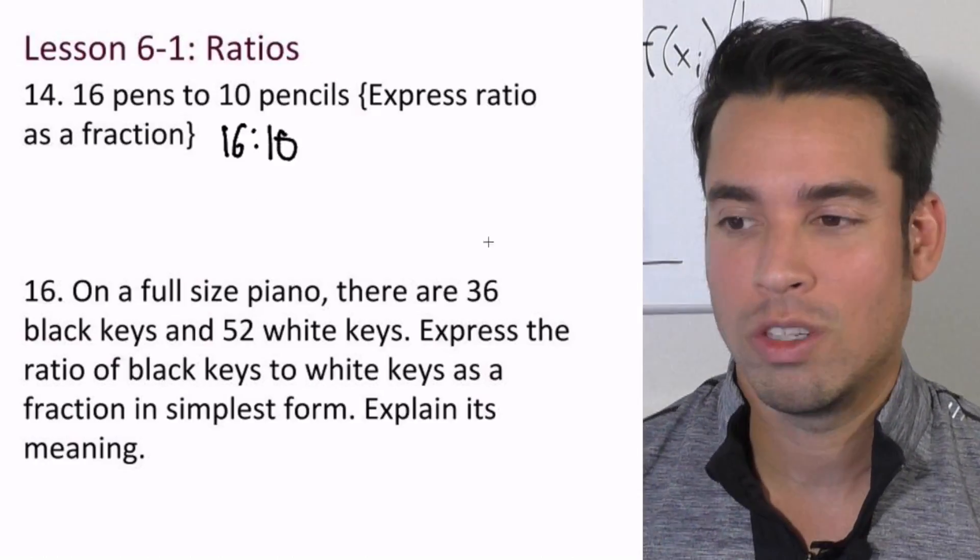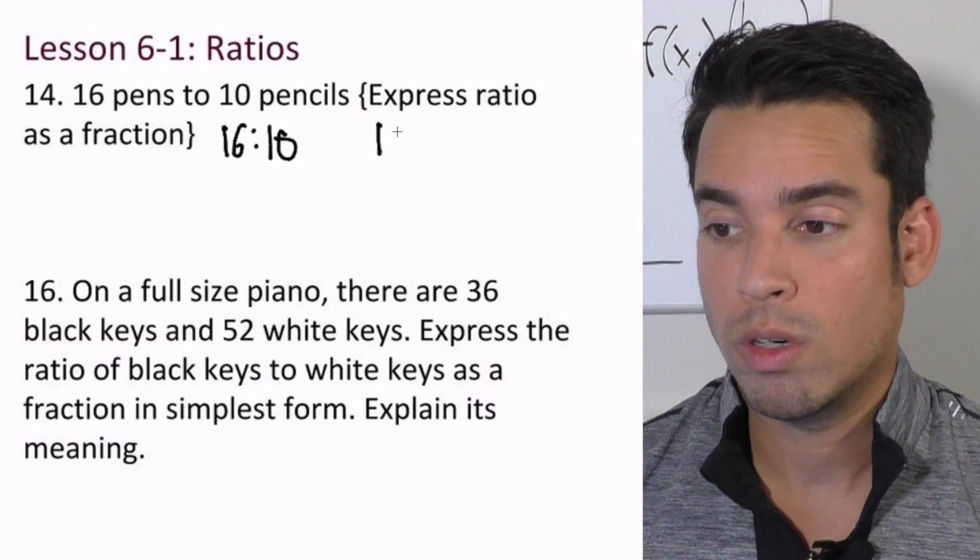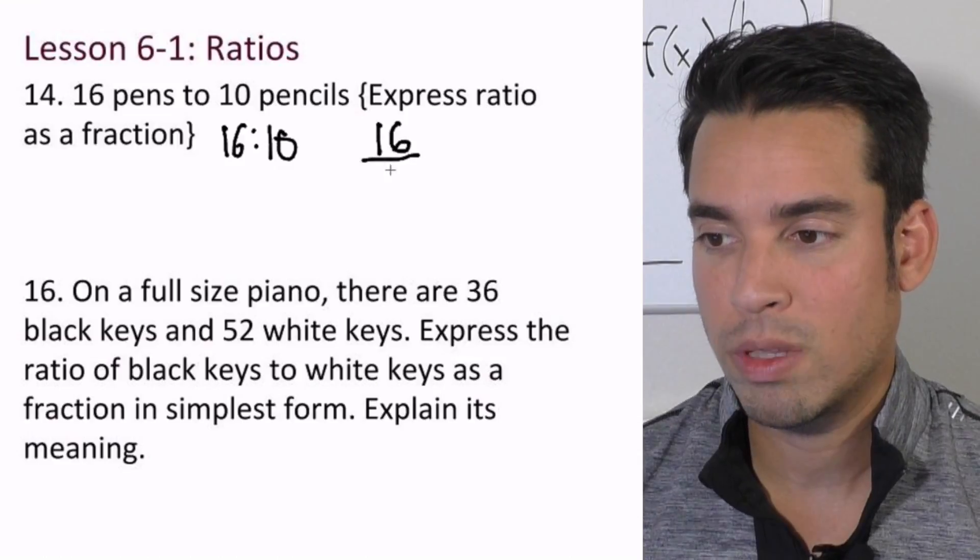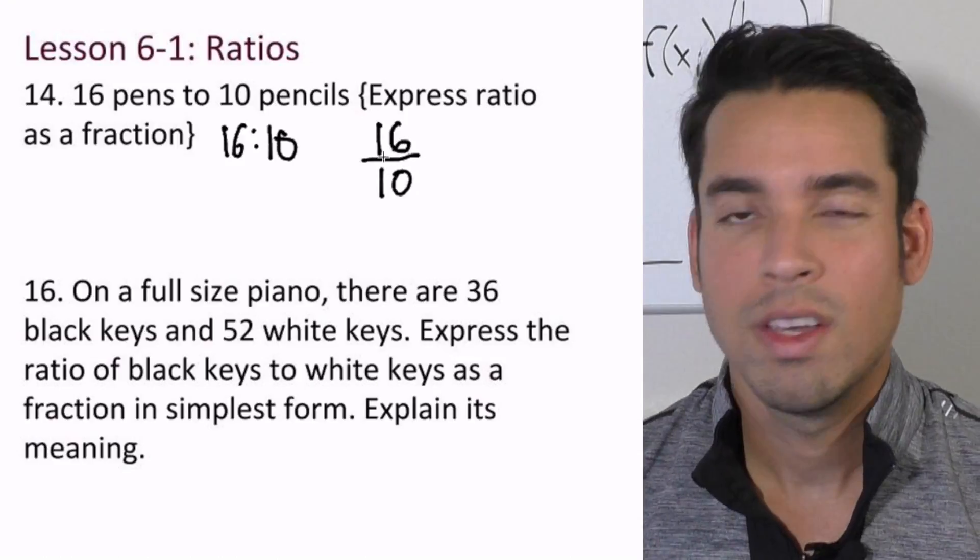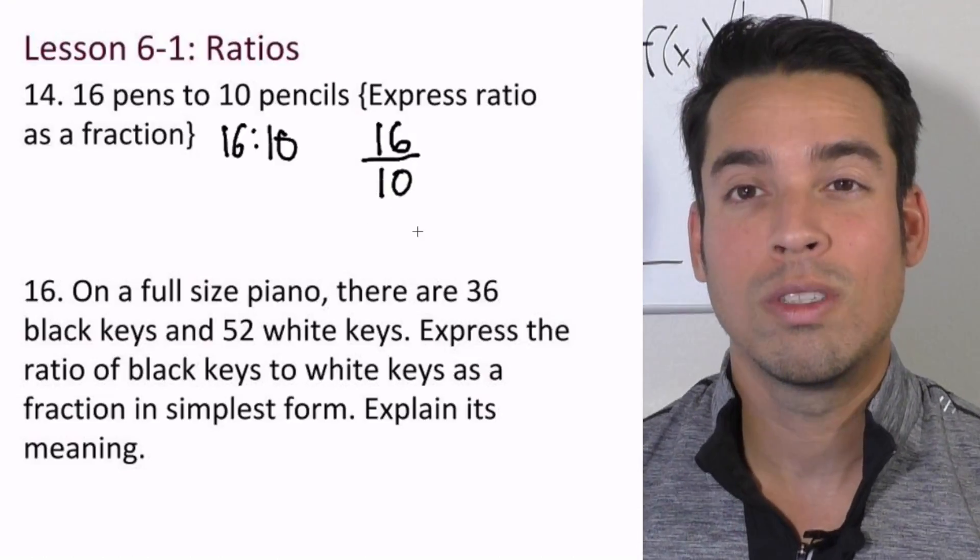The way we do that is we can do it one way, however we want, but we're going to set it up in the same order. So we put the first one usually on top: 16 over 10. Now what do we do with an improper fraction like this? We reduce it.